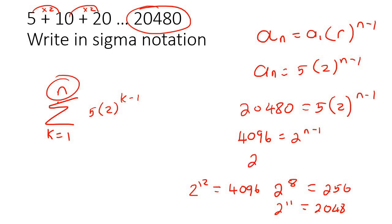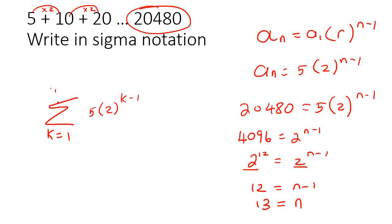So we can change this to 2 to the 12. What happens now is that we can cancel the 2s. You just end up with that over there. Then you can solve for n and get 13. So we have 13 terms, and that's all you need to do.